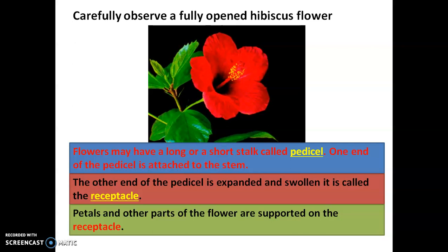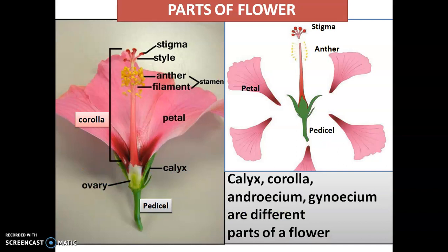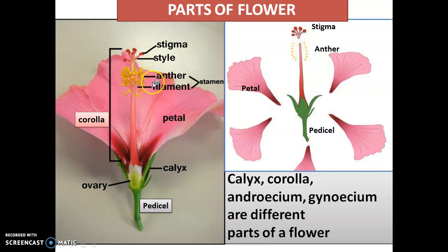Petals and other parts of the flower are supported on the receptacle. So here you can see the beautiful petals and other parts of the flower — these parts are supported on the receptacle. Now let's study about the parts of the flower. We have calyx, then corolla — this pink color one is the corolla — then androecium, which is the male reproductive part of the flower. These are the important parts of the flower and each part we will be studying in detail.